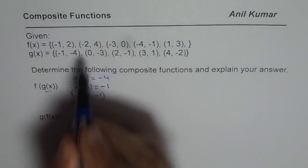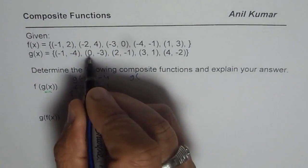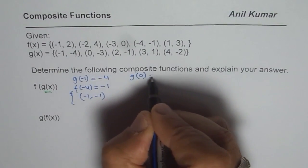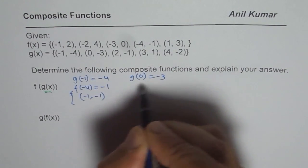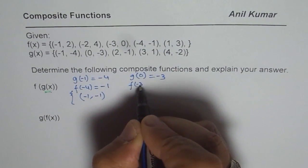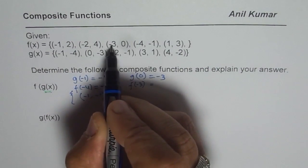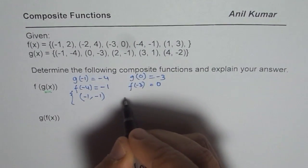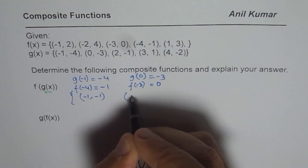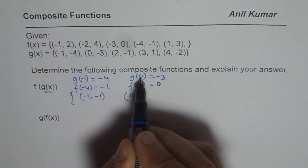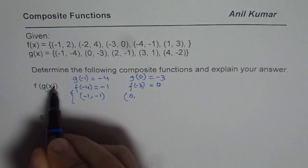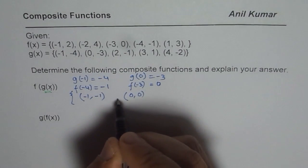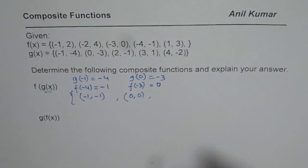Then we will try to find g of 0. g of 0 equals minus 3. Then we say what is f of minus 3 equals to? f of minus 3 is 0. So we get the second point, which is (0, 0). For the input of 0 here, the output is 0. So likewise, we can calculate all the points.